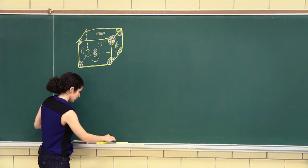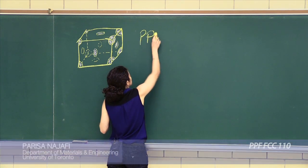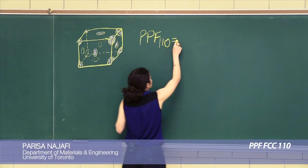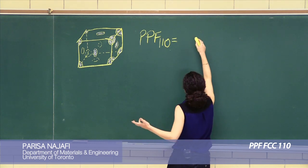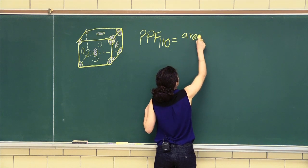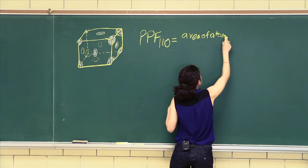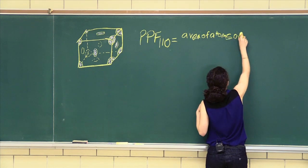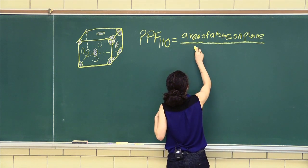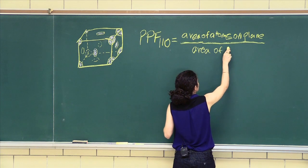Okay, so the planar packing factor for the 1, 1, 0 plane. Let's write the formula. So it's area of atoms on the plane all over the area of the plane.